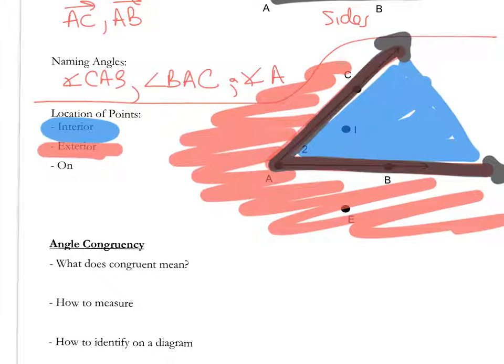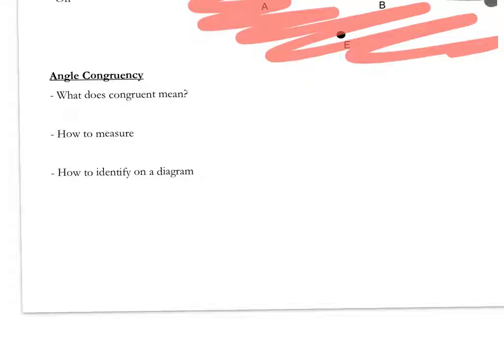That's just the idea of inside, outside, or on. If they ask, for example, this point E, is that inside or outside, you would say E is on the exterior, whereas the letter I, or that point I, is on the interior of the angle.